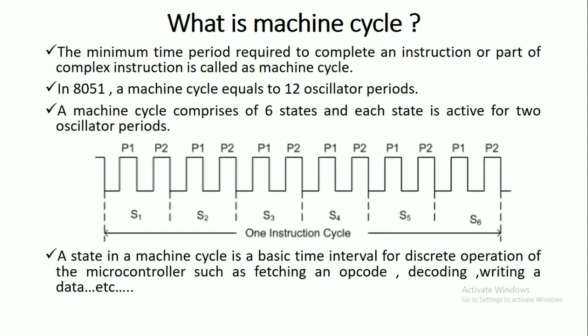The definition of the machine cycle is the minimum time period required to complete an instruction or a part of complex instruction is called as machine cycle. Generally for 8051, a machine cycle equals to 12 oscillator periods.